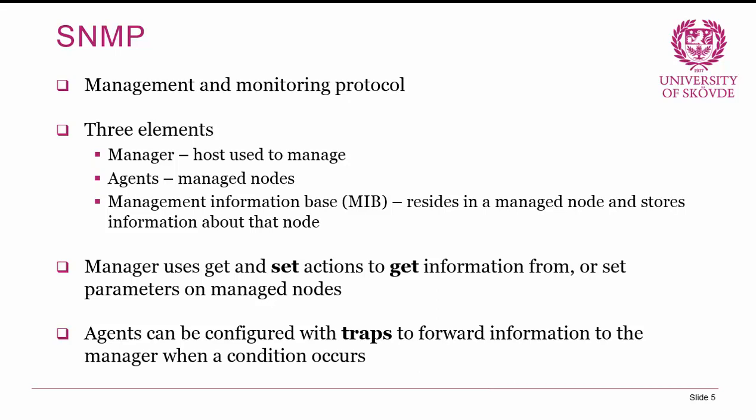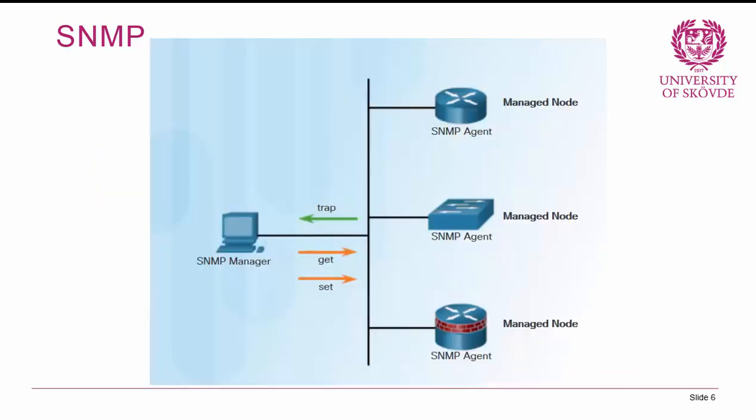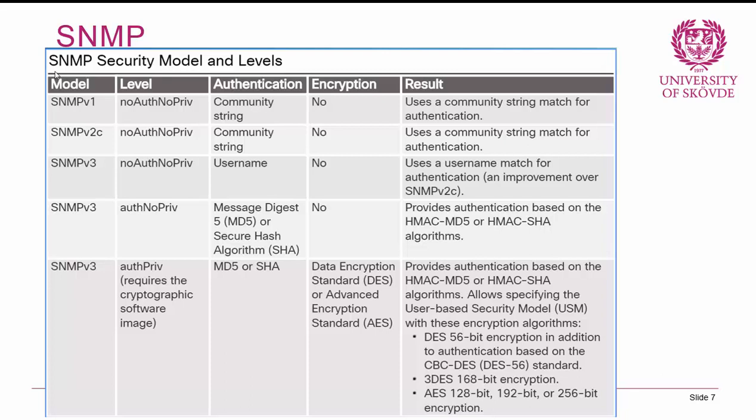When SNMP is running, there are three elements to be aware of: the manager, the agents, and the Management Information Base (MIB). The manager is the host used to manage or collect information. The agents are the managed nodes, and the MIB resides on those nodes and stores information about them. The manager uses GET and SET actions to retrieve or configure information on managed nodes, and agents can be configured with traps to forward information to the manager when a condition occurs.